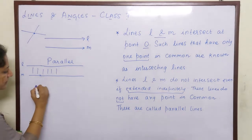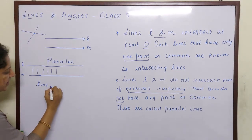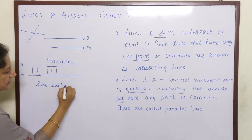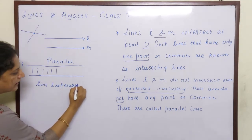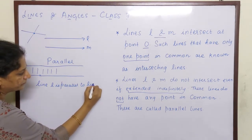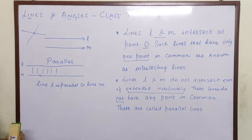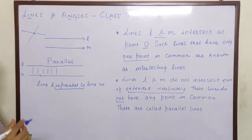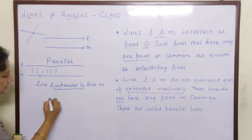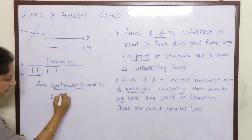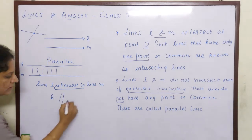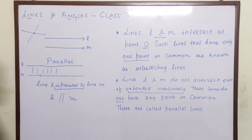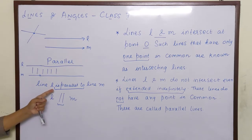We say line L is parallel to line M. When writing it, instead of writing 'is parallel to', we use a symbol. That symbol denotes 'is parallel to'.